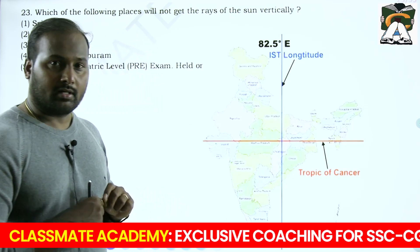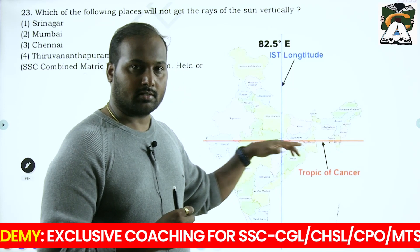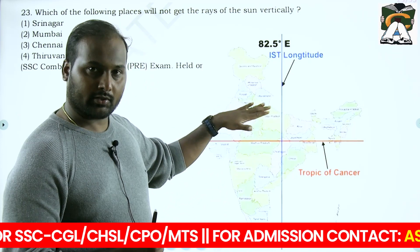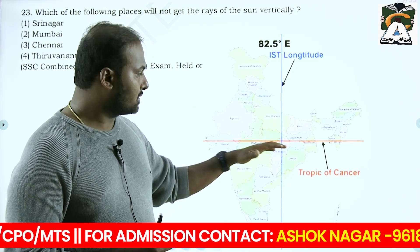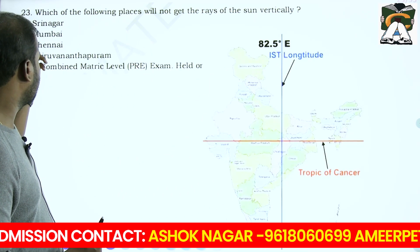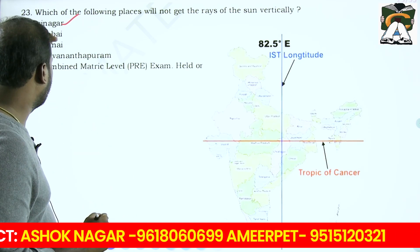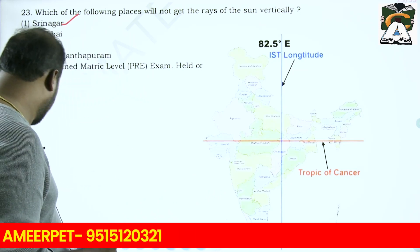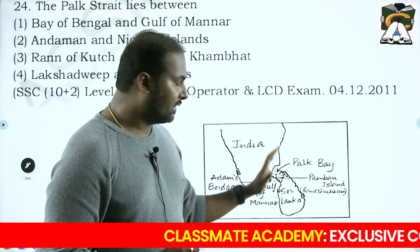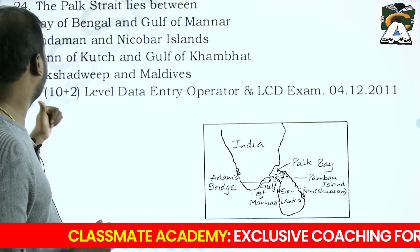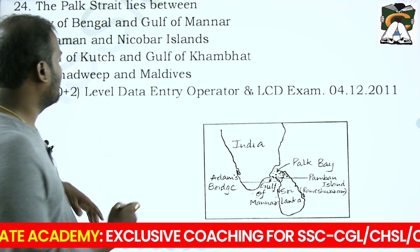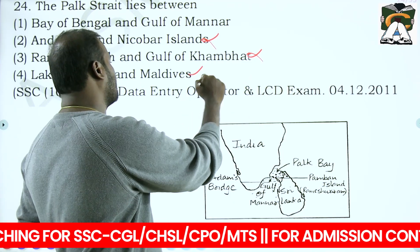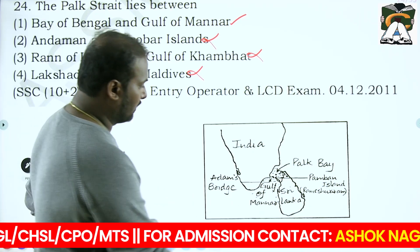'Which of the following places will not get vertical rays of the sun?' Whatever areas or cities are present above the Tropic of Cancer, the sun rays will never fall vertically - they will fall in a slant direction. Options are Srinagar, Mumbai, Chennai and Thiruvananthapuram. Your answer is Srinagar, because Mumbai, Chennai and Thiruvananthapuram are all in the southern part, below the Tropic of Cancer. The Palk Strait lies between the Bay of Bengal and the Gulf of Mannar - Option 1 is correct.